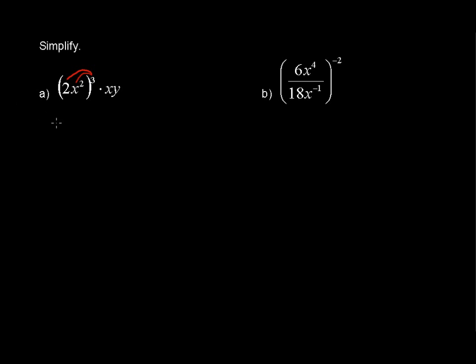So if we rewrite this we would have 2 to the third power times x squared to the third power times x times y. And these little dots of course being multiplication, you can put them in or you don't need them when you're dealing with these variables. But I'll put them in just to show that we're multiplying here.